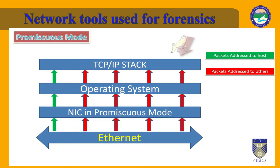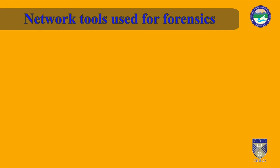Promiscuous mode is often used to diagnose network connectivity issues. There are programs that make use of this feature to show the user all the data being transferred over the network. Some protocols like FTP and Telnet transfer data and passwords in clear text without encryption, and network scanners can see this data. Therefore, computer users are encouraged to stay away from insecure protocols like Telnet and use more secure ones such as SSH.